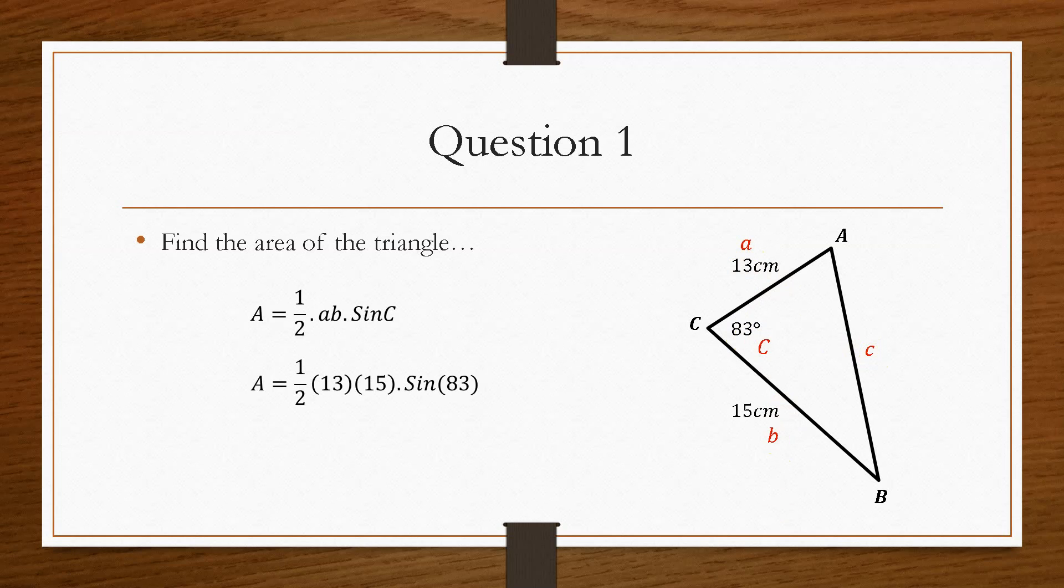A half times 13 times 15 gives us 97.5. If we multiply this by sine 83, that gives us a total area of 96.77 centimetres squared. Don't forget your units with these questions because they can be picky in the exam, and potentially you could lose a full mark for forgetting your units.